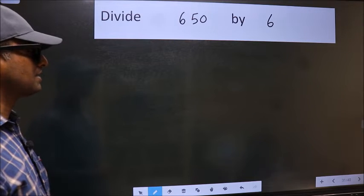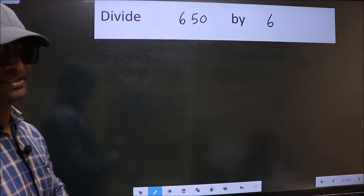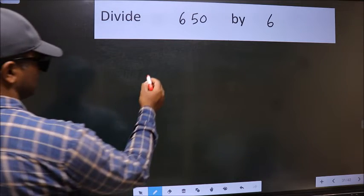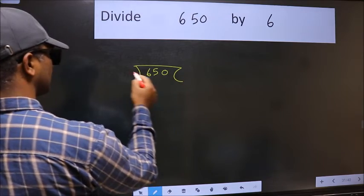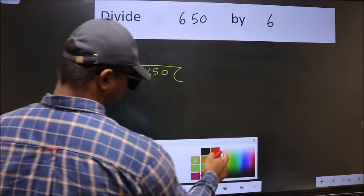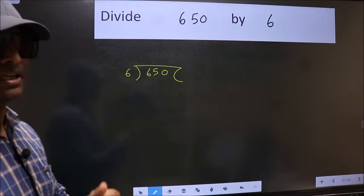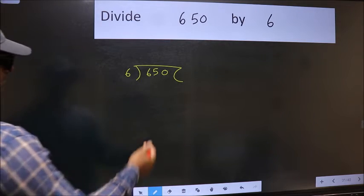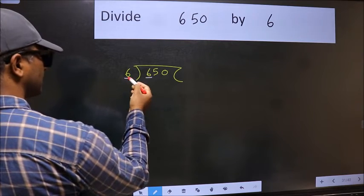Divide 650 by 6. To do this division, we should frame it in this way: 650 here and 6 here. This is your step 1. Next, here we have 6 and 6 here. When do we get 6 in 6 table?